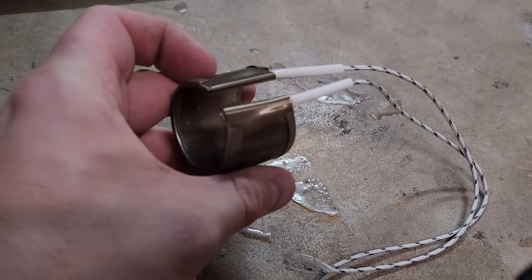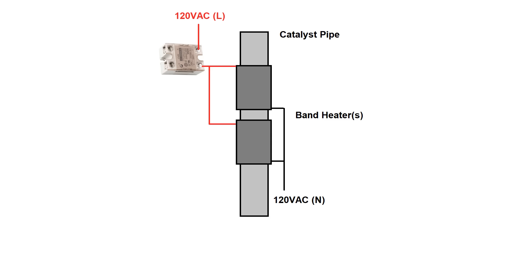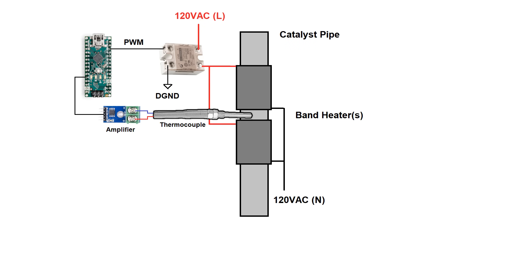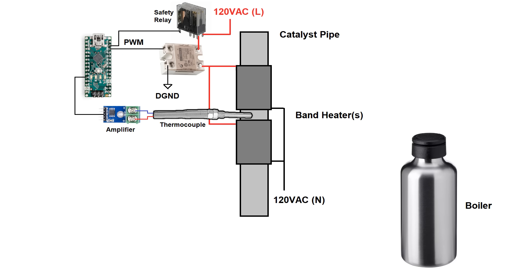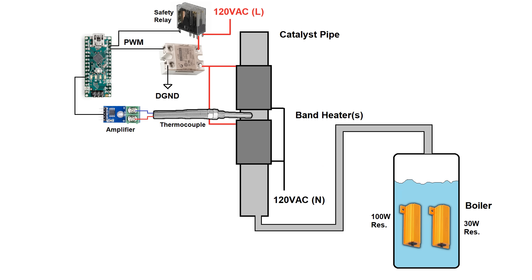Here's how I'm going to automate the whole process. First, I'm ditching the propane burner and heating my catalyst pipe with electric band heaters meant for injection molding machines. To control the temperature, the heaters are wired through a solid state relay driven by a PWM signal from an Arduino board. Feedback comes from a thermocouple stuck right in the middle of the catalyst pipe. There's also a mechanical relay upstream of the solid state one as a safety shutoff in case the solid state relay fails shorted. I'll keep using resistors with 120 volts to boil the alcohol, but in a stainless steel bottle with a screw-on lid and at least one liter capacity. The boiler will have two heater settings: 100 watts and 30 watts.